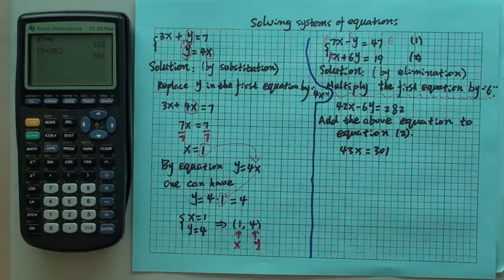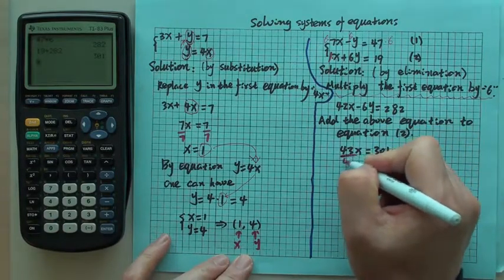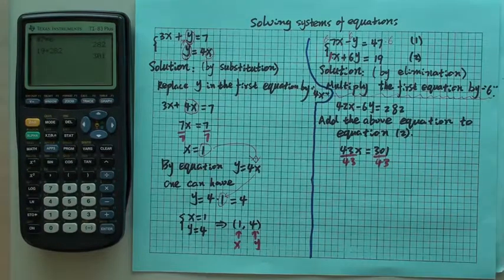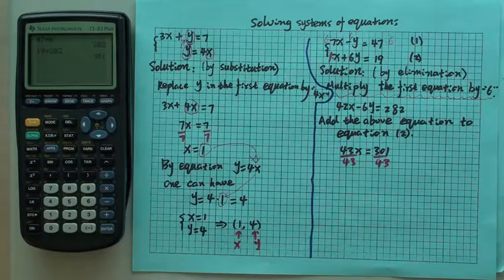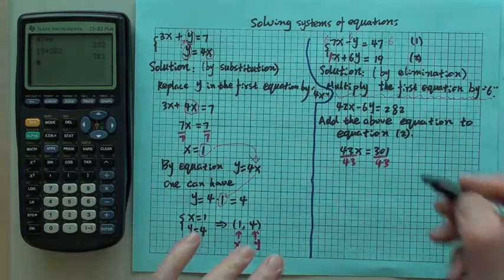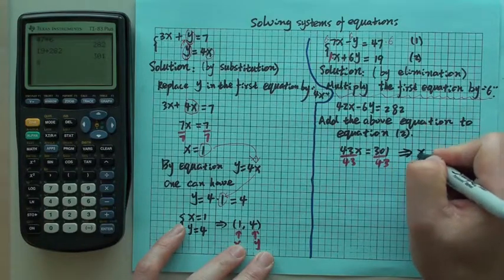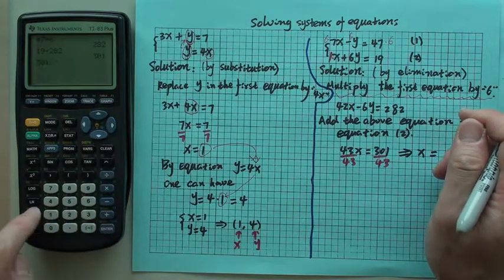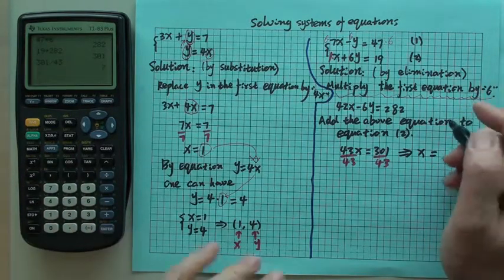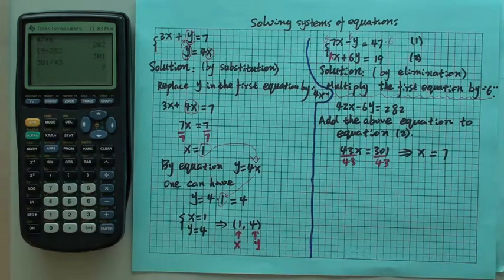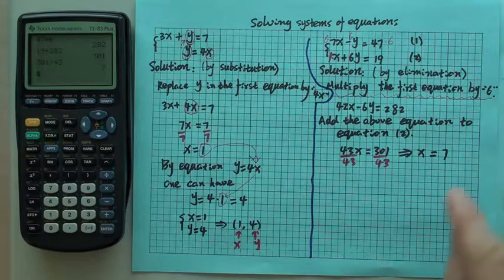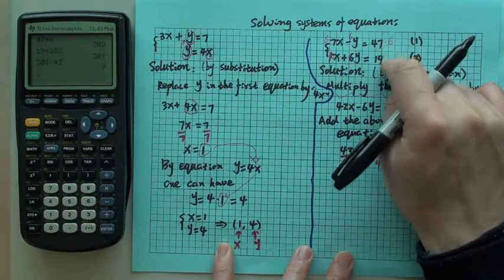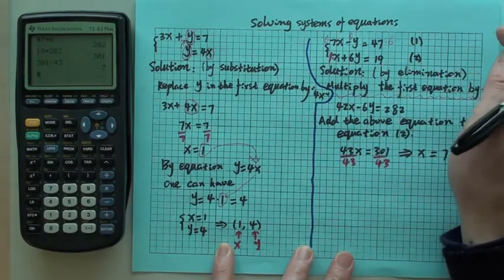And up to this far, we want to divide both sides by 43. And then you have 43, 43 cancelled, and then 1 times x. So you can have x on the left. x equals 301 divided by 43 is 7. Now we have the value for x equals 7. You can put this 7 anywhere here.